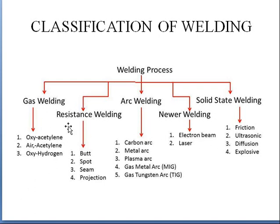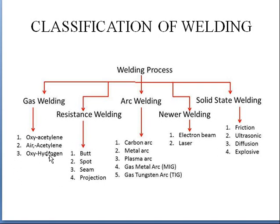Depending upon the fuel used, gas welding is of three types: oxy-acetylene, air-acetylene, and oxy-hydrogen. One cylinder contains oxygen and another contains acetylene, for example. Depending upon the combination of gases, gas welding is divided into these three types.